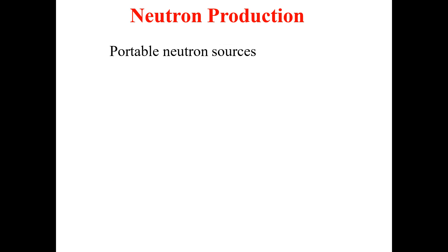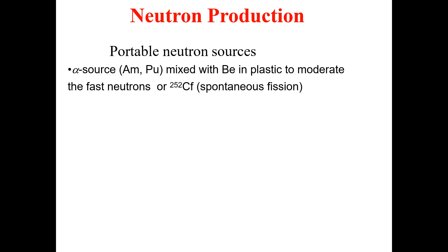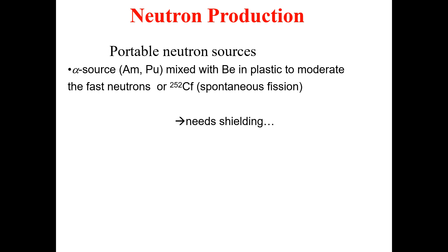There are also portable neutron sources. Portable neutron sources include alpha sources from americium and plutonium mixed with beryllium and a plastic moderator. For fast neutrons, californium-252 with spontaneous fission is used. This kind of source normally requires shielding.